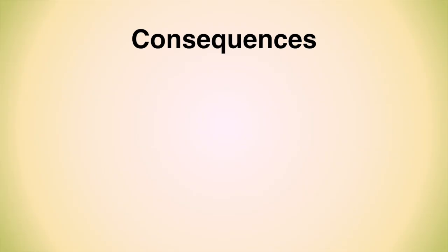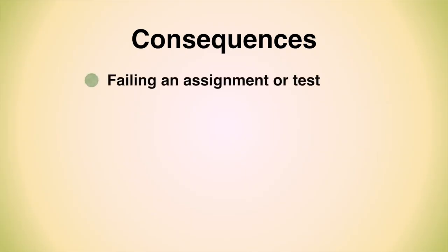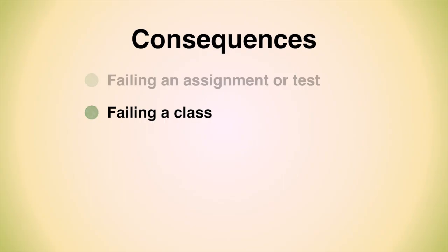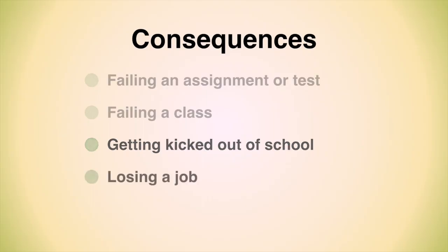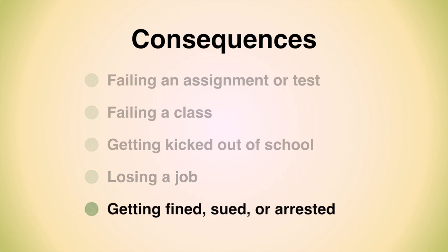Learning about academic dishonesty is important because there are lots of bad outcomes. Depending on the type and extent of academic dishonesty, you could fail the assignment you cheated on, fail the whole class, get kicked out of school, or even lose a job. There might even be things you could do that would get you fined, sued, or even arrested. Don't let that be you. Avoid plagiarism and all other forms of academic dishonesty, even if you have to turn in an assignment late. It's much easier to do your own work and thus do your own learning. After all, cheating on papers isn't really an issue of getting one over on your professor — it's actually cheating yourself out of an opportunity to learn.